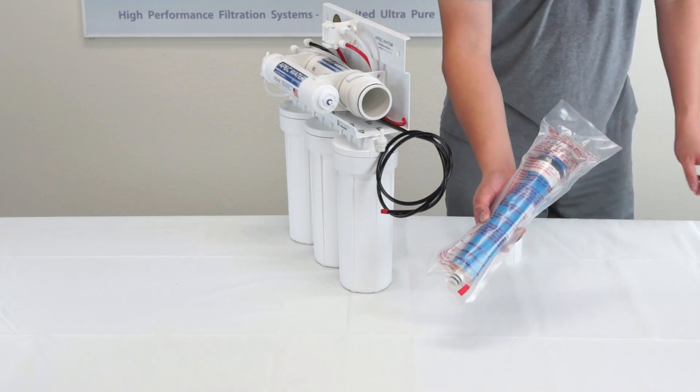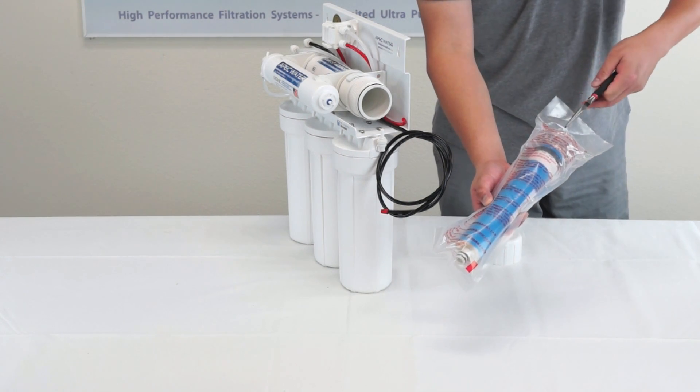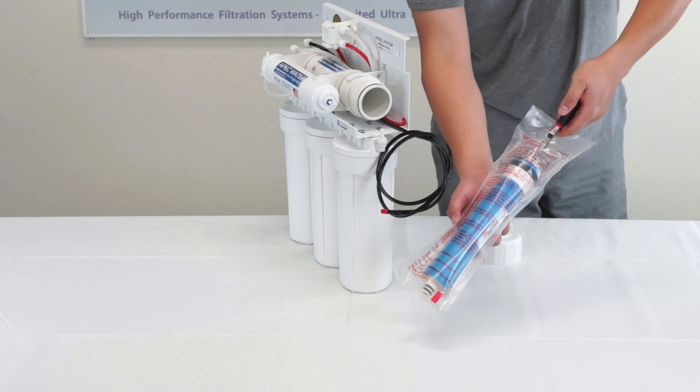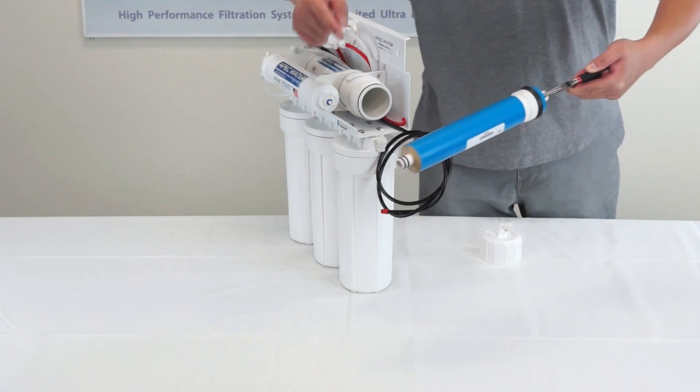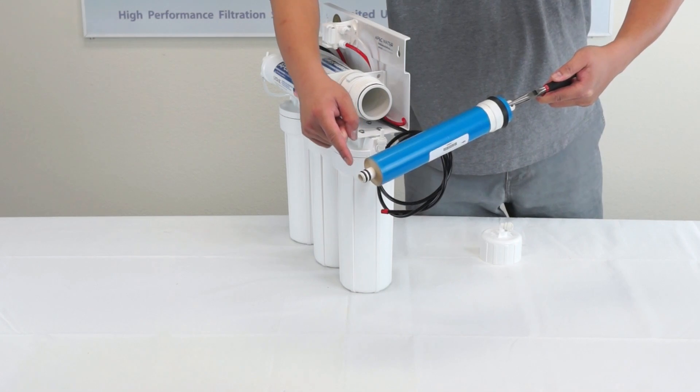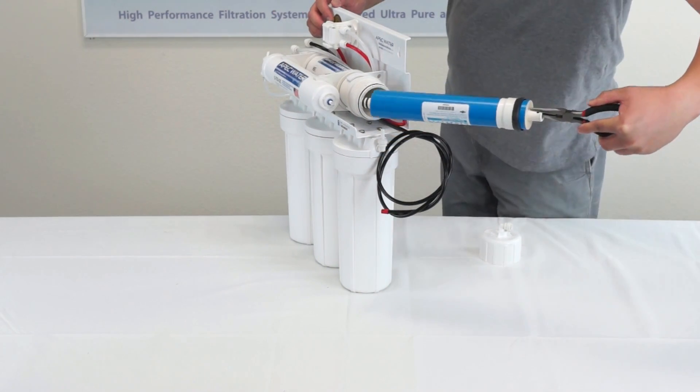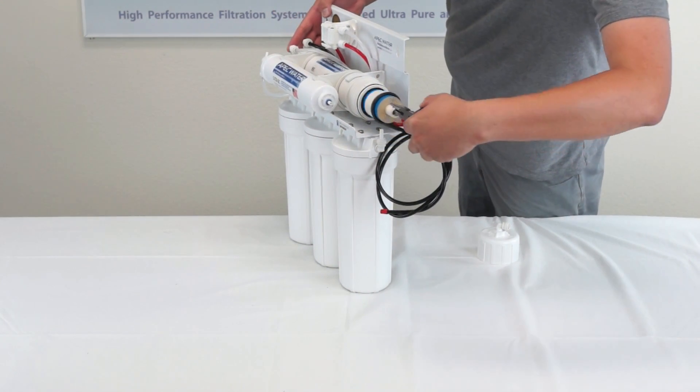To avoid touching the membrane filter, use a pair of needle nose pliers to handle the membrane. Please remove the membrane from the bag. The double O-ring side will be inserted into the membrane housing first. Insert the membrane all the way into the housing.